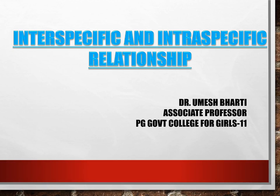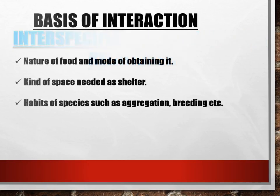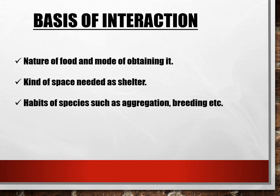Now these relationships are very important. Coming to the basis of these interactions: first and foremost is the nature of food and mode of obtaining it. Through food, that is the trophic chain, we are attached with each and every individual. Kind of space needed as shelter. Next is the habit of species such as aggregation and breeding. So all these things are the basis of interaction among different organisms.